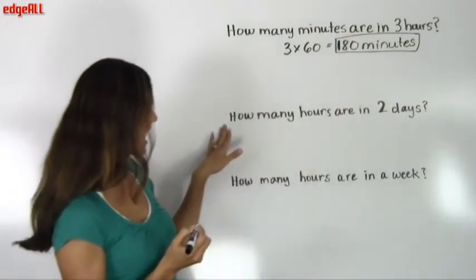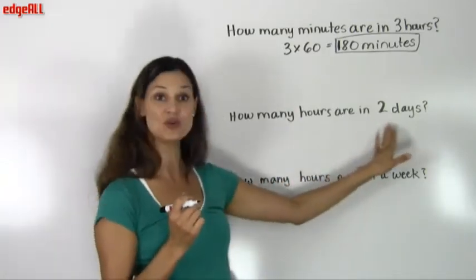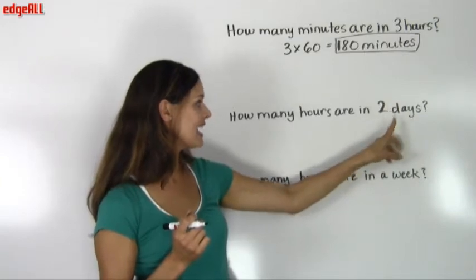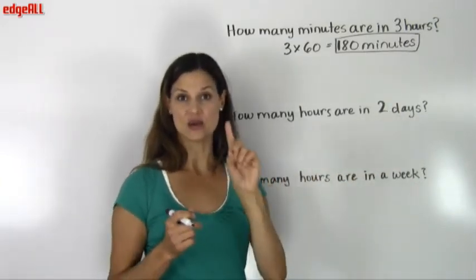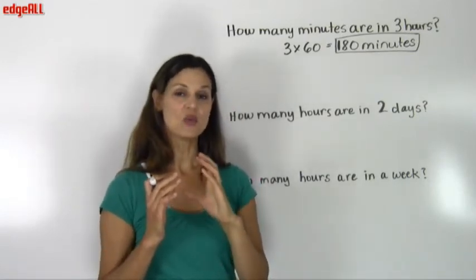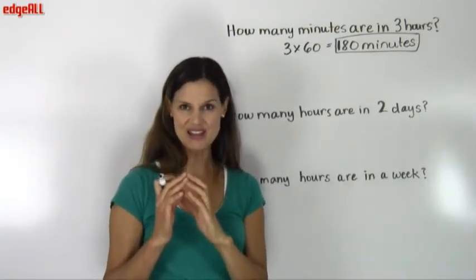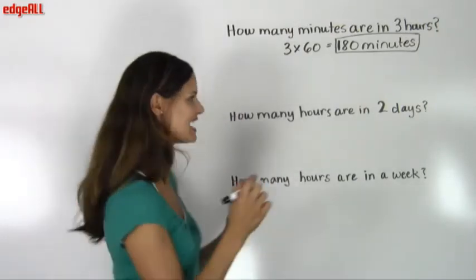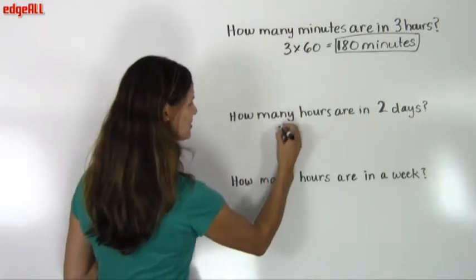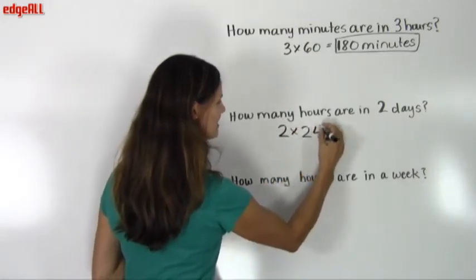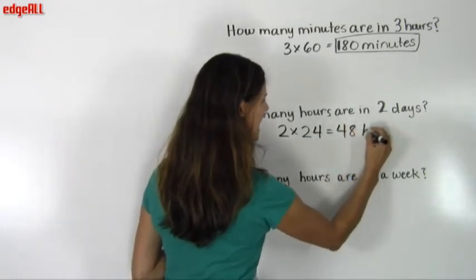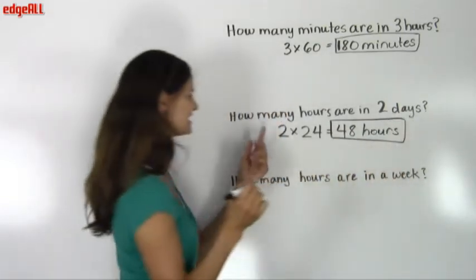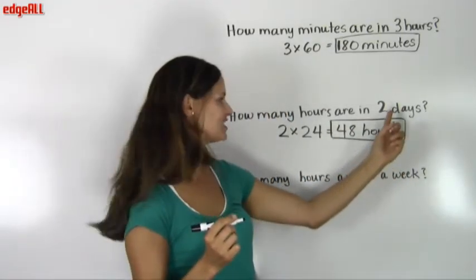Our second example asks: how many hours are in two days? We know that one day is twenty-four hours. So we need to multiply twenty-four times two to find out how many hours we have in two days. Two times twenty-four gives us forty-eight hours. There are twenty-four hours in one day and forty-eight hours in two days.